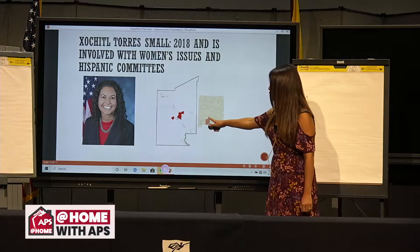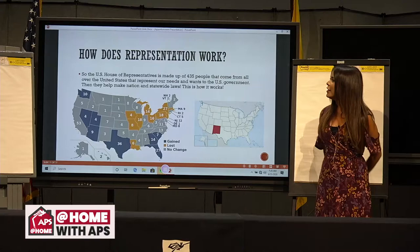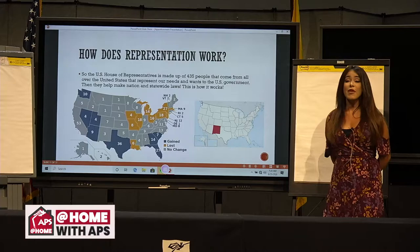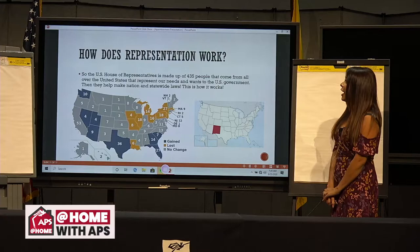How does representation work? Let's talk a little bit more about that. The U.S. House of Representatives is made up of 435 people that come from all over the United States and represent our needs and wants to the U.S. government. They help make nation and statewide laws.